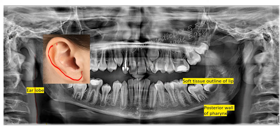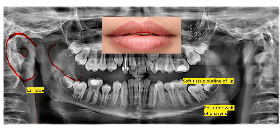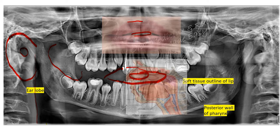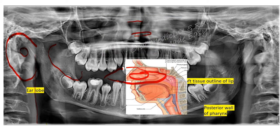This is the earlobe, which is evident as a shadow here. This is the earlobe and this opening is evident here, and this outline of the lips is seen as a faint shadow at the center — this is the lip. This is the posterior wall of the pharynx, visible on either side. So these are the three soft tissue landmarks seen here.